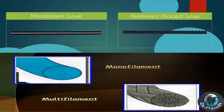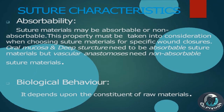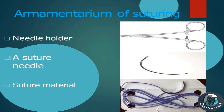Suture Characteristics — Tensile Strength: expressed as the force required to break the suture when pulling the two ends apart. It depends on the constituent of suture materials, thickness of suture materials, and how it is handled in the tissues. Absorbability: suture materials may be absorbable or non-absorbable. This property must be taken into consideration when choosing suture materials for specific wound closures. Oral mucosa and deep structures need absorbable suture materials, but vascular anastomoses need non-absorbable suture materials.